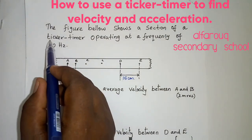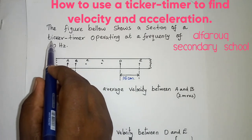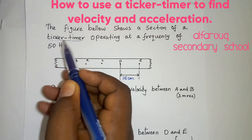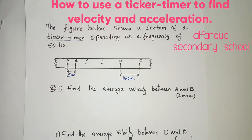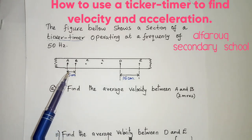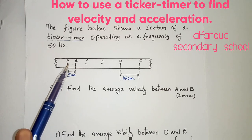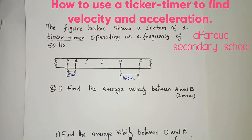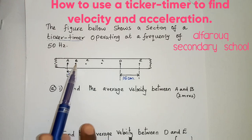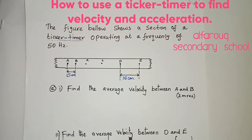A ticker timer is usually used to determine the frequency, velocity, and acceleration over a short distance. Here we have the spacings. We have 1, 2, 3, 4, 5, 6 dots. The spacing between two dots is called a tick.